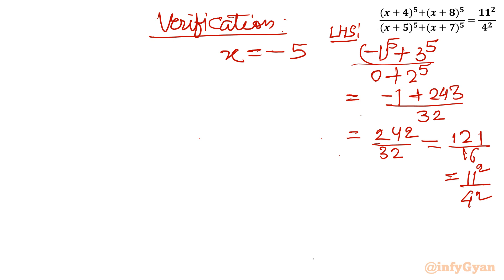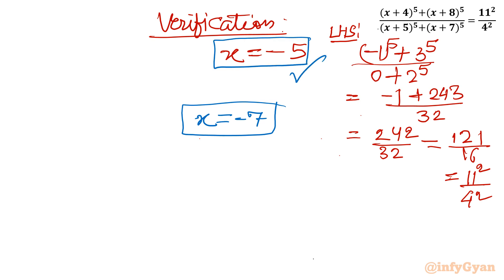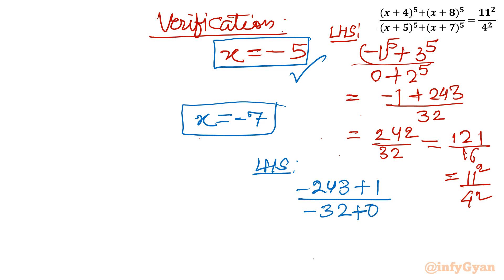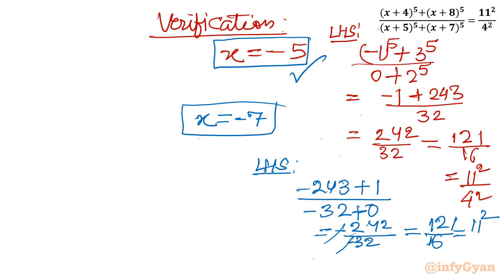For x = −7: numerator is (−3)^5 + (1)^5 = −243 + 1 = −242; denominator is (−2)^5 + (0)^5 = −32. So LHS = −242/(−32) = 242/32 = 121/16 = 11²/4² = RHS. This is also verified. So our real solutions are x = −5 and x = −7.